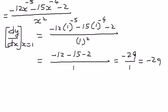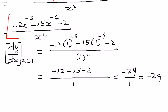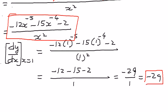Therefore, the derivative of the given function y = (3x + 2)/x times (x to the power of negative 5 plus 1) is negative 12x to the negative 5 minus 15x to the negative 4 minus 2, divided by x squared. Evaluated at x equals 1, we get negative 29. This is how we use the product rule and the quotient rule together to solve problems. Thank you for being with me for this presentation.